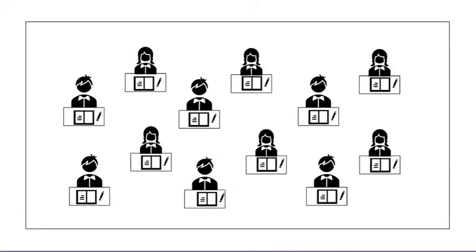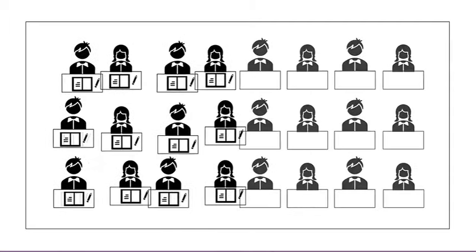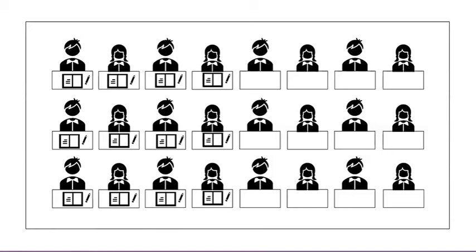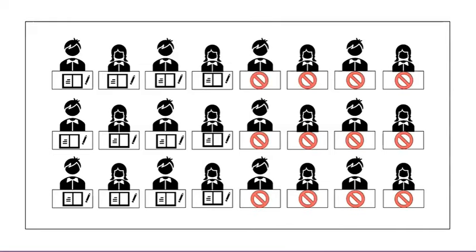Let's look at an example where a classroom functions as a system. Imagine, on a Tuesday morning, you find out that a nearby school is going to be closed for the next few days. Your school's principal has asked your class to host a class from that school until it reopens. How will all these extra students affect the class? Well, you will have more students in the classroom, but you have only enough textbooks and supplies for your regular class. When more students arrive, there won't be enough for everyone.